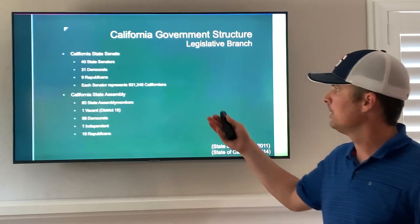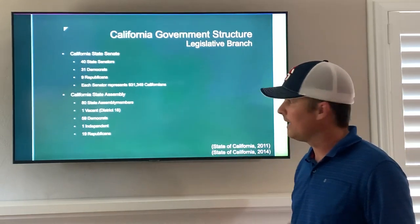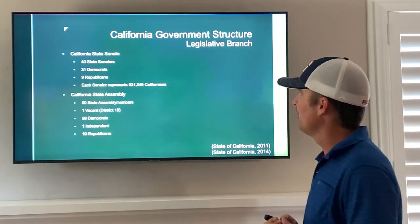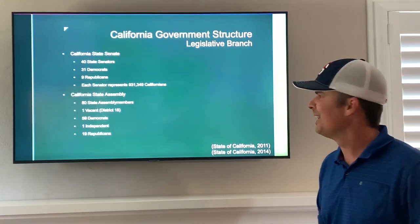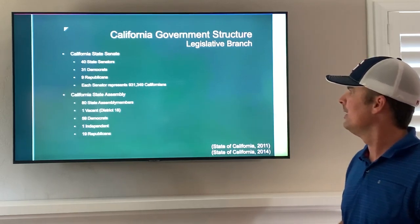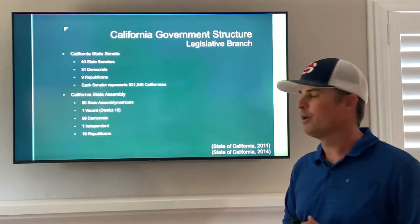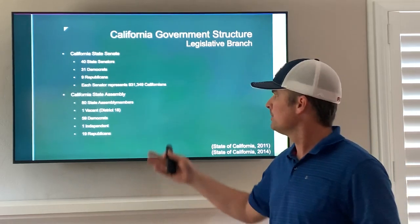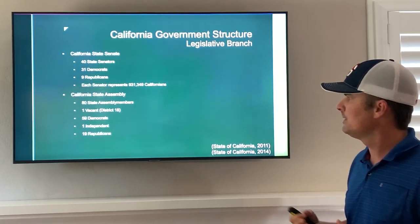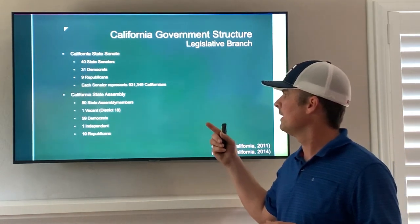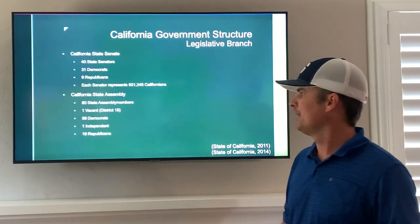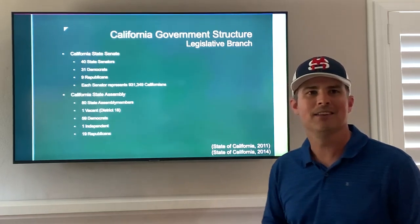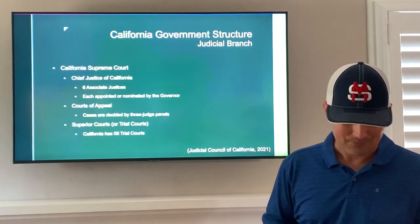The California legislative branch includes the California State Senate, which is made up of 40 state senators — 31 Democrats and 9 Republicans in California — and each senator represents 931,349 Californians. Also in the legislative branch is the California State Assembly, made up of 80 state assembly members, one of which is currently vacant. Again, the Democrats dominate the Republicans in California, and there is one independent in the State Assembly.